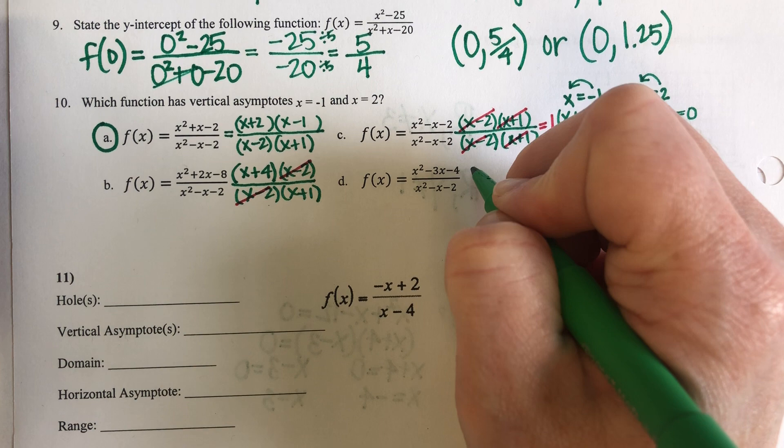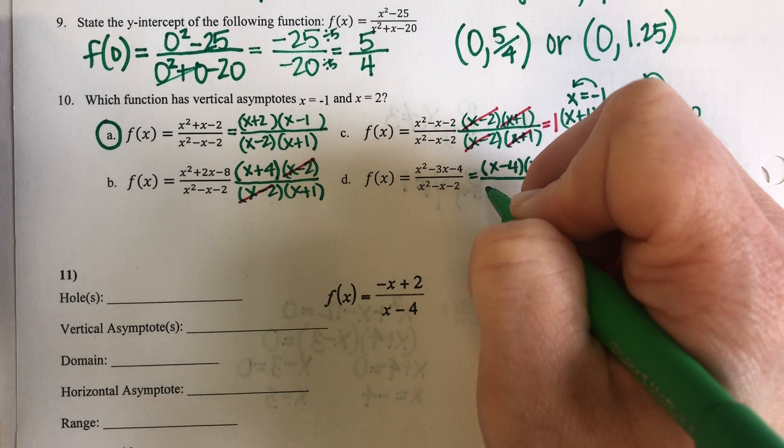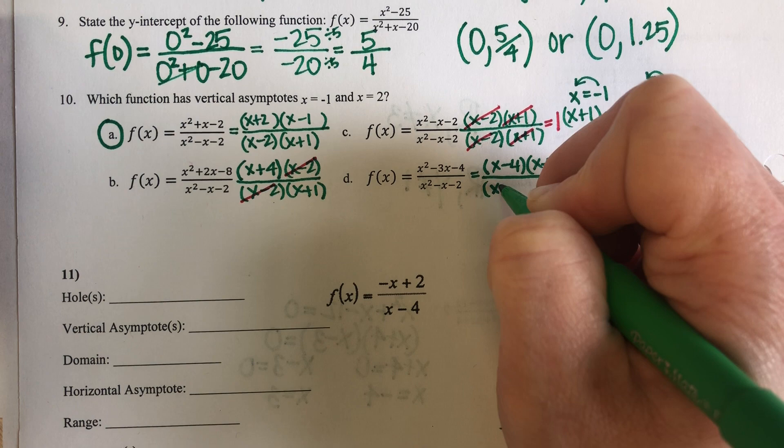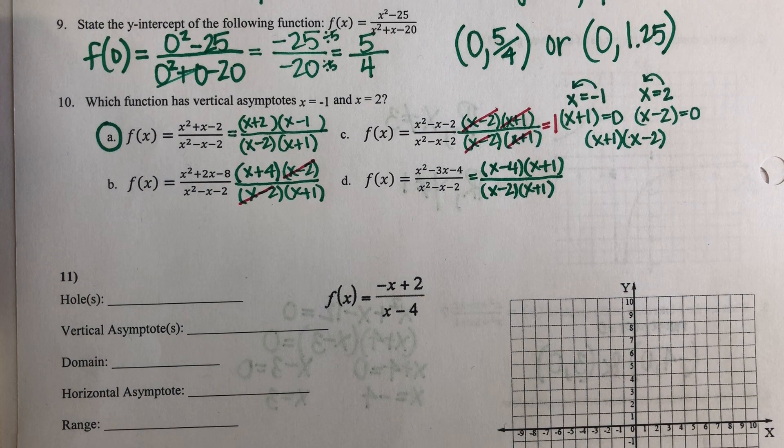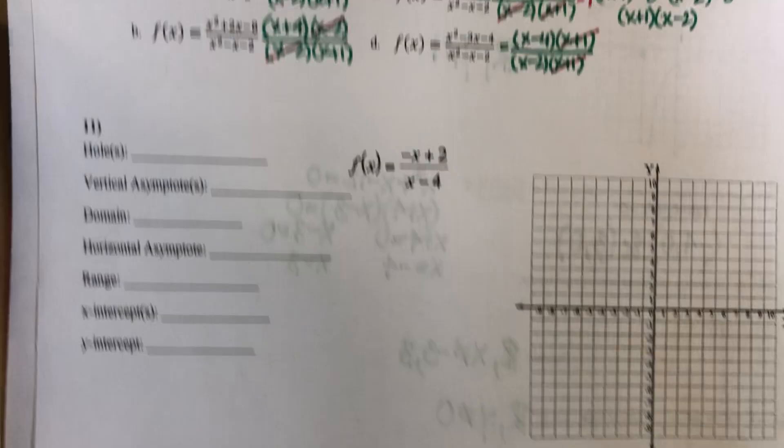And then for the last answer choice D, the factors of negative four that add up to negative three are negative four and positive one. The bottom has X minus two and X plus one.